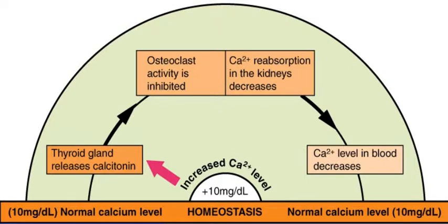While calcitonin is active, the kidneys decrease the amount of calcium that they reabsorb from what's going to be the urine, which also helps blood calcium levels decrease as calcium is excreted in the urine, and that should bring the calcium levels back down to a normal level.